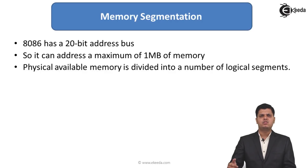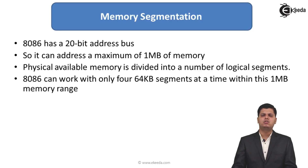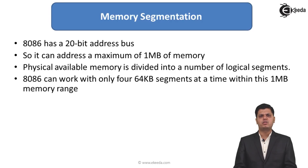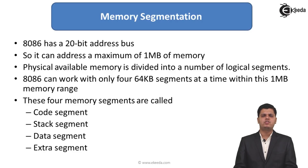Segmentation means this whole 1 megabyte of physical memory is divided into a number of logical segments. Logical segments are formed depending upon how the data is being stored in memory. The 8086 can work with only 64 kilobytes of a segment at a time within this 1 megabyte memory range, so only 64 such segments can exist within the total memory.